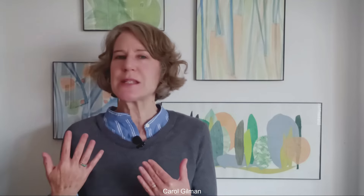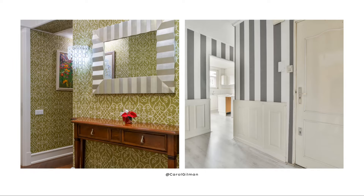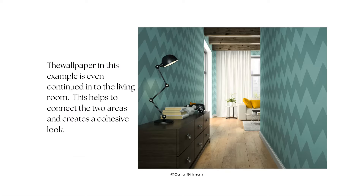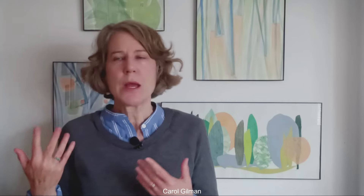Another way to decorate those long expanses is to change up the color or add pattern or texture. You could change the wall color to a lighter or darker shade that relates to the rest of your paint colors, or even an accent color. Adding a wallpaper that brings in colors from the rest of your home adds pattern and interest, making that passageway more beautiful and interesting. You could even add a feature wall with stone, wood, or another texture that makes sense with your home's architecture.